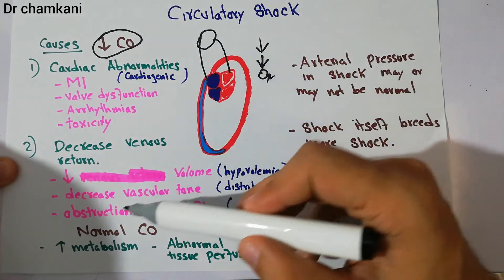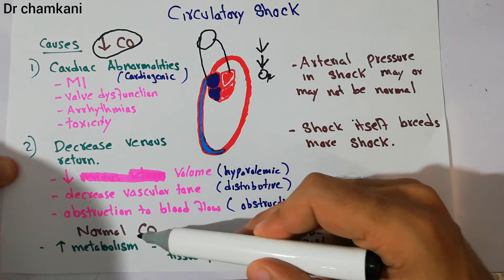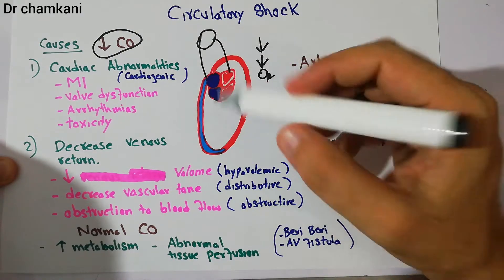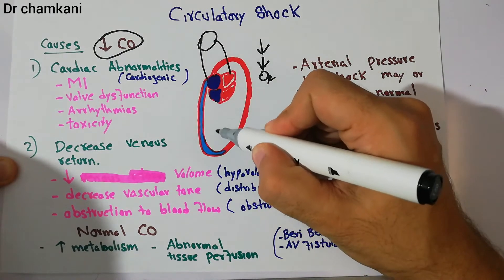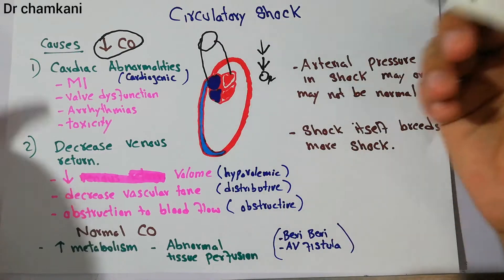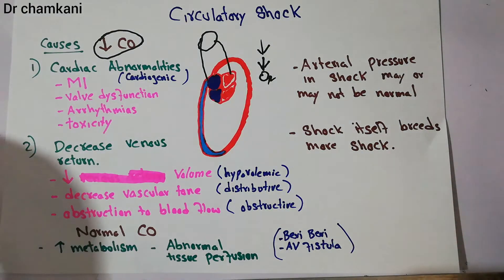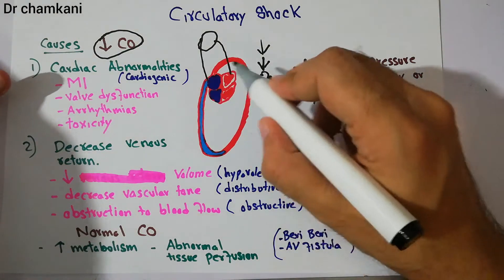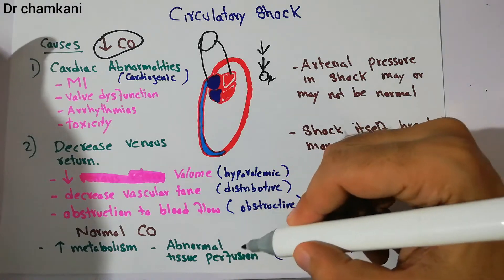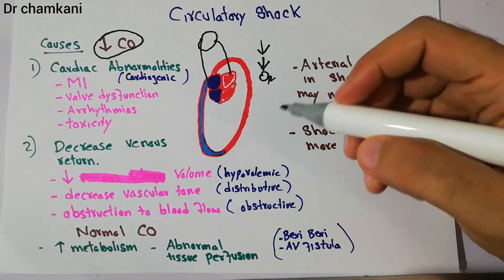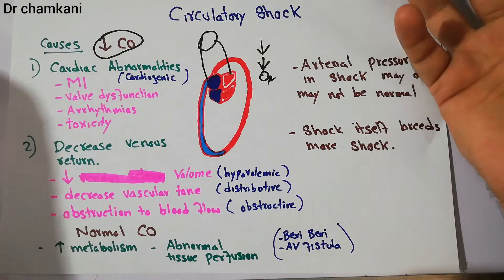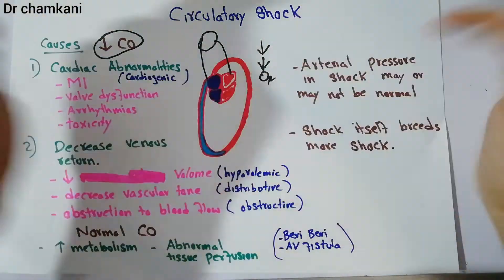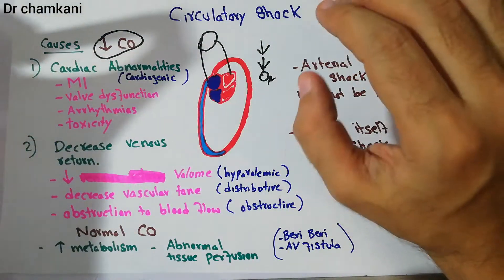The other type of circulatory shock is one in which cardiac output is normal but either the metabolism of the body is very high — the demand for oxygen or nutrients is very high — or the demand is normal and cardiac output is normal but there is abnormal tissue perfusion, where blood is taken through vessels which are not properly supplying the tissues.